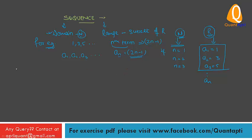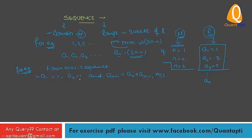Another example for sequence is the Fibonacci sequence. For the Fibonacci sequence: A1 equals 1, A2 equals 1, and A(N+1) equals AN plus A(N-1) for N greater than or equal to 2. This is the relation between the Nth term and the previous Nth term.